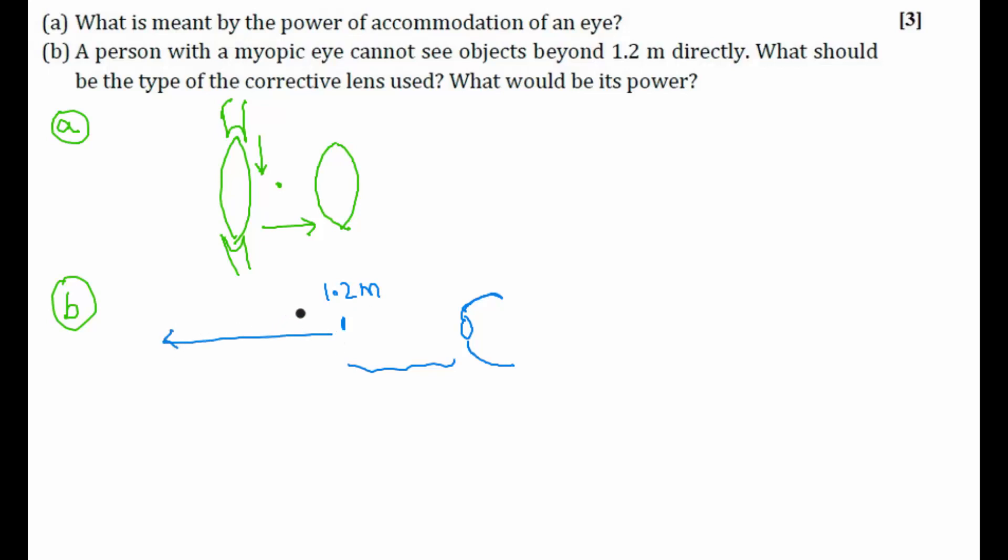What should be the type of corrective lens used? We know that for a myopic eye we need to use a concave lens, which will help to diverge the rays so that the rays will meet at the retina. So we will be using a concave lens. It will help us to diverge the rays coming from the objects which are far away.